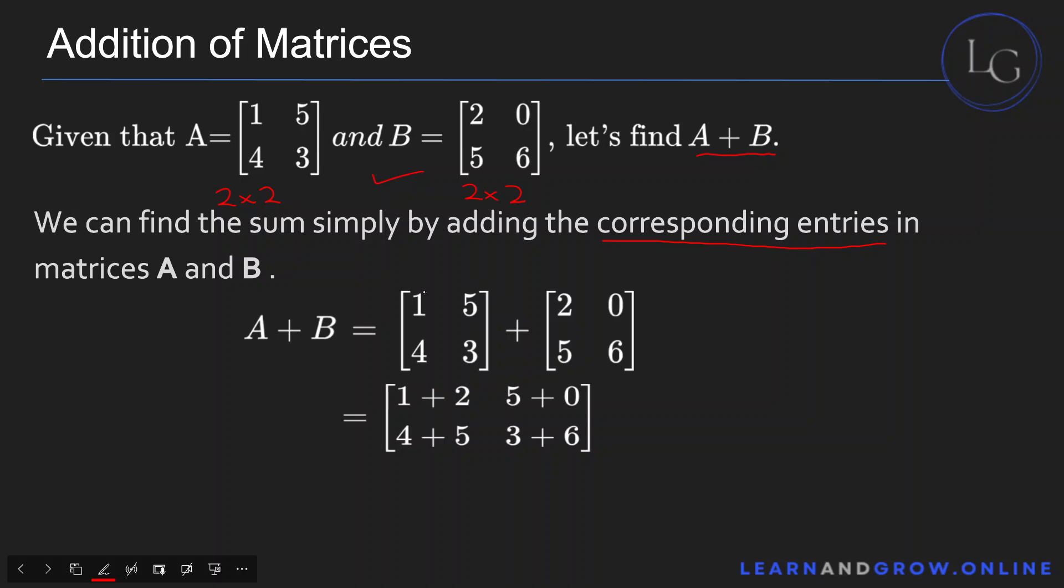The corresponding entry of 1 here is 2. The corresponding entry of 5 is 0. And as you can see in the resultant matrix, it's 1 plus 2 and 5 plus 0, 4 plus 5, and 3 plus 6. This is the resultant matrix.